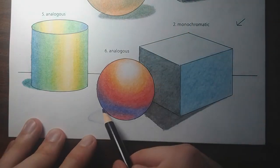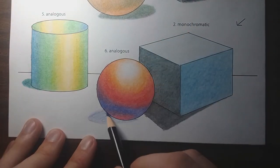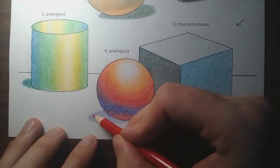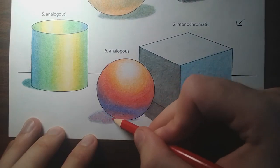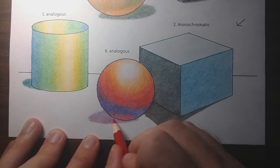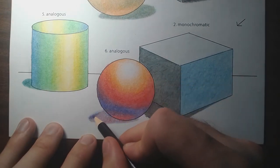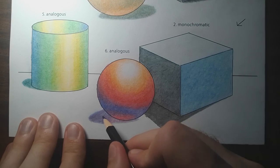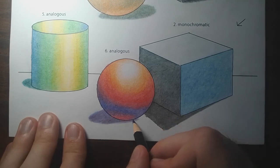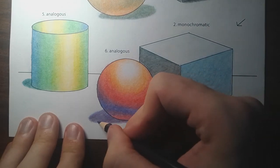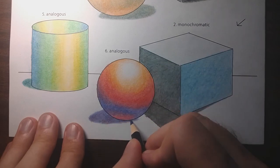And to finish it off, I fill in the cast shadow using the violet and the red in order to make it darker. And this completes our analogous sphere.